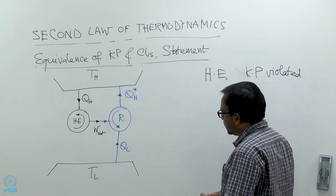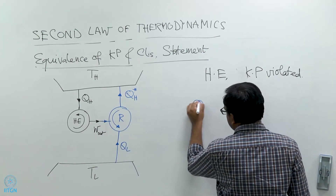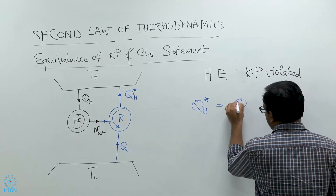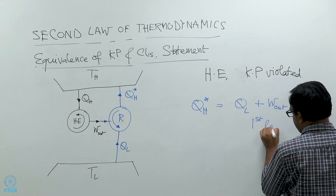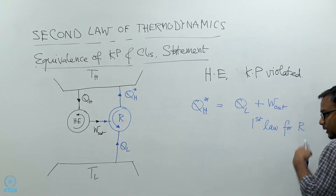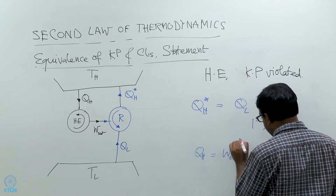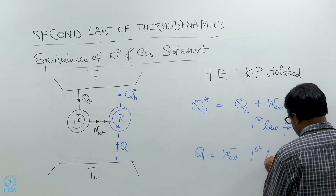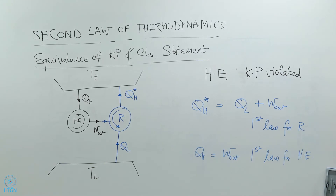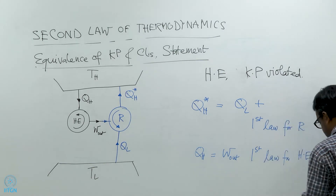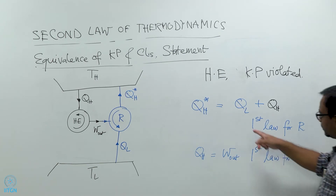Applying the first law to the refrigerator over one cycle gives Q_H* = Q_L + W_out. Similarly, applying the first law to the heat engine gives Q_H = W_out. That means I can replace W_out with Q_H, so Q_H* = Q_L + Q_H.